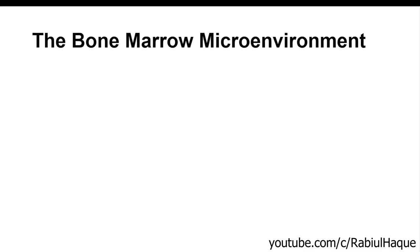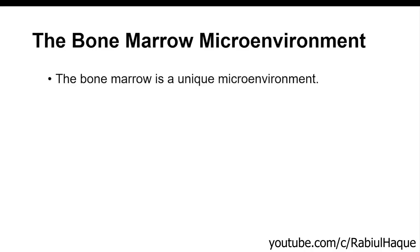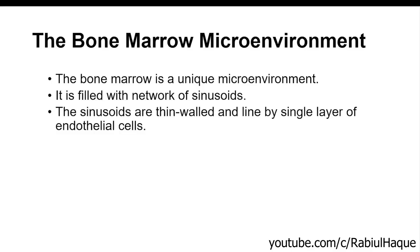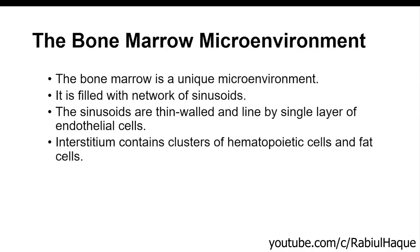Now let's talk about the fascinating bone marrow microenvironment. It is a unique microenvironment composed of networks of sinusoids. Sinusoids are thin-walled vessels lined by a single layer of endothelial cells. You may ask, Dr. O'Bill, capillaries are also lined by a single layer of endothelial cells — so what is the basic difference? Always remember: the basement membrane in the case of a capillary is continuous, but the basement membrane of sinusoids is discontinuous. That is the main difference between sinusoids and capillaries. The interstitium or space between the sinusoids contains clusters of hematopoietic cells and fat cells.